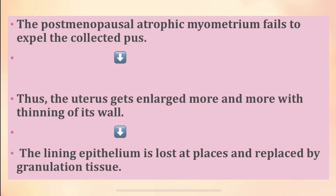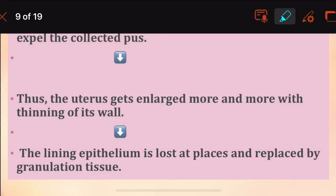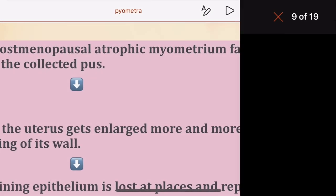The post-menopausal atrophic myometrium fails to expel the collected pus. Once the woman is in the post-menopausal period, there will be no periodic shedding of the endometrium. As a result, the collected pus cannot be expelled. Thus, the uterus will go on enlarging more and more, and there will be thinning of the wall of the uterus. The lining epithelium is lost at places and is replaced by granulation tissue. As the pus increases, the walls are thinning and the offending sites are replaced by granulation tissue.